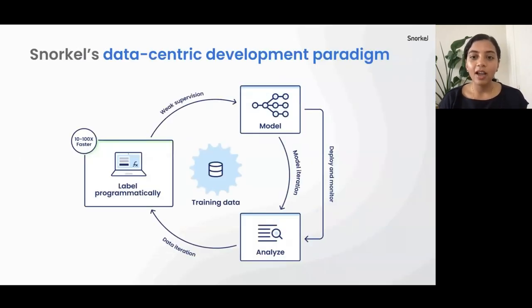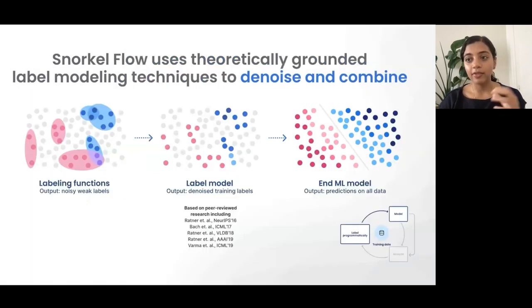So, how does Snorkel tackle all of this? Snorkel has this unique data-centric development paradigm. For people who have been attending the FTK talks over the past couple of days, this is probably really familiar, but bear with me as I walk through it again. With Snorkel's workflow, you label programmatically. You don't use manual labels. You're able to combine these programmatic labels together using weak supervision. And then you're able to train an end model using your programmatic labels. Finally, you can analyze your model using our suite of error analysis tools, and then use that analysis to feed back into your programmatic labels to iterate on your data and further improve that model that you're going to use.